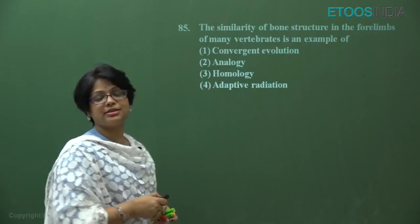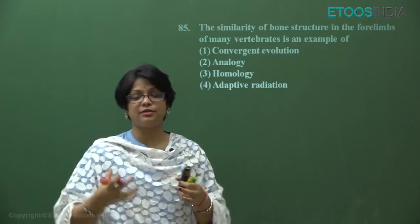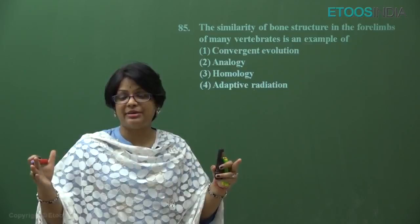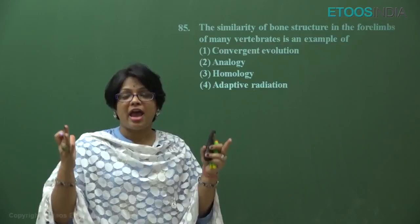The forelimbs of man are for grabbing things, the forelimbs of cheetah are for running, the forelimbs of whale are for swimming, and the forelimbs of bat are for flying. So they have different functions because of different habits and habitats, but they have the same structure and same origin.